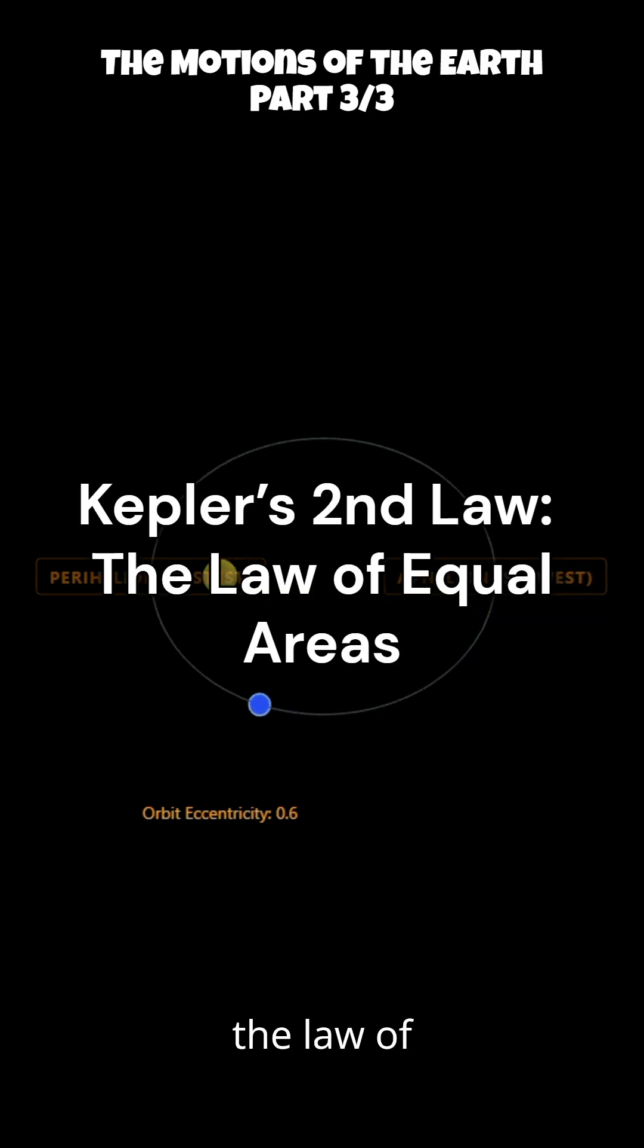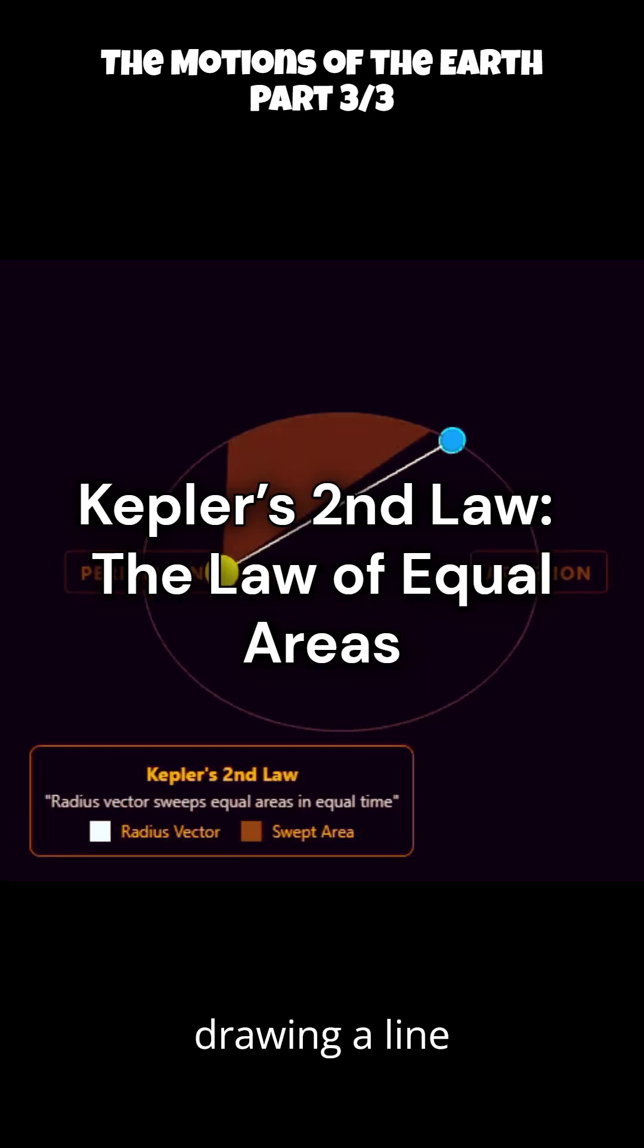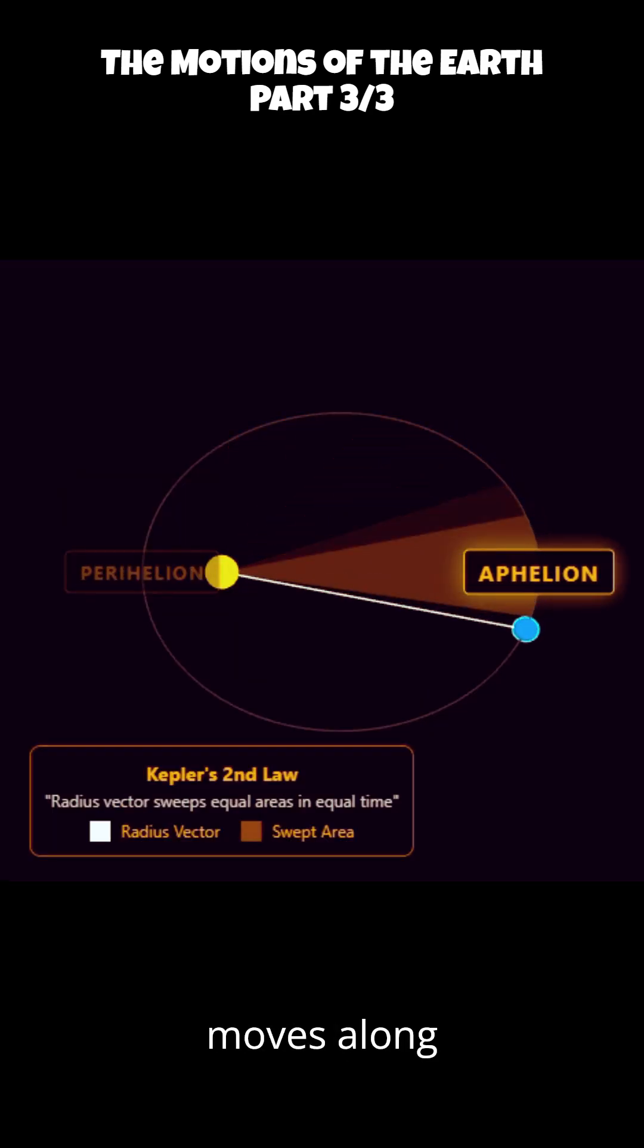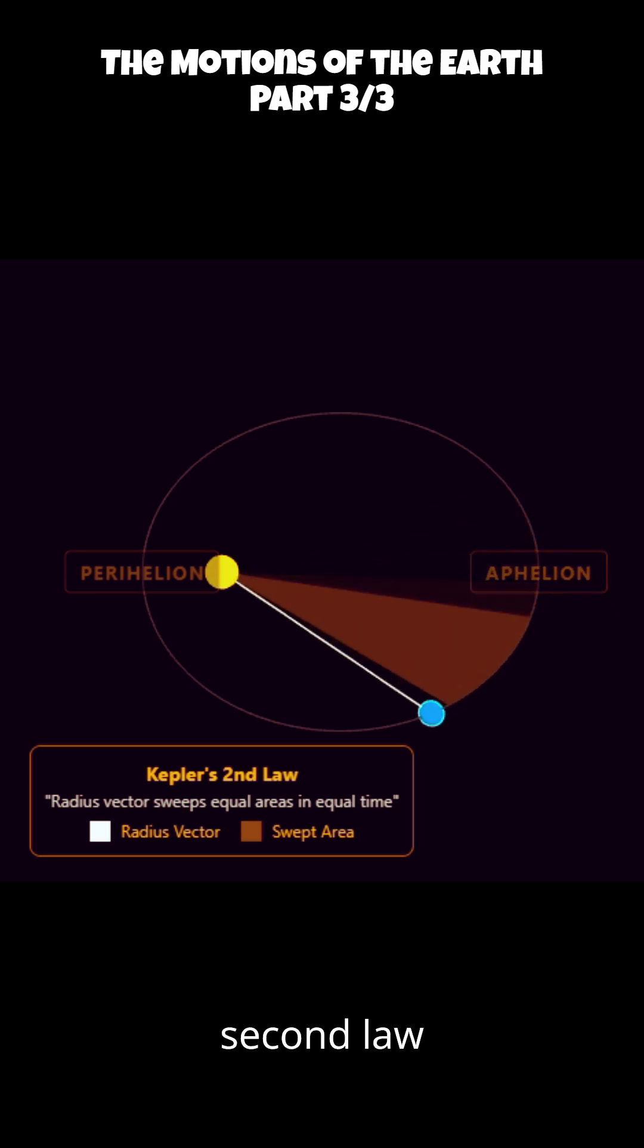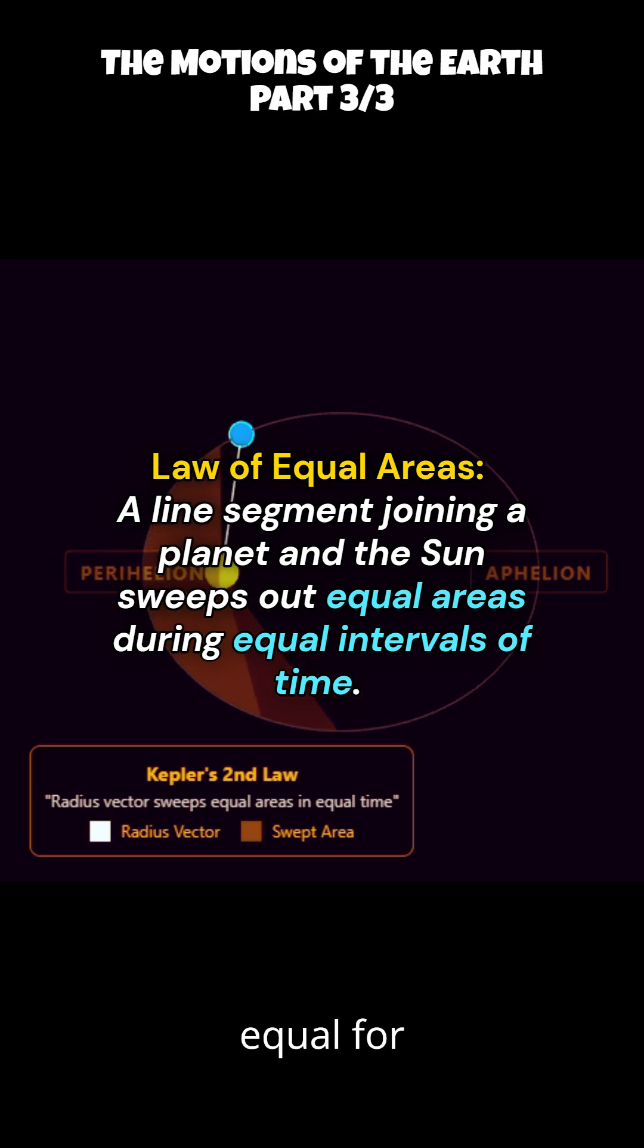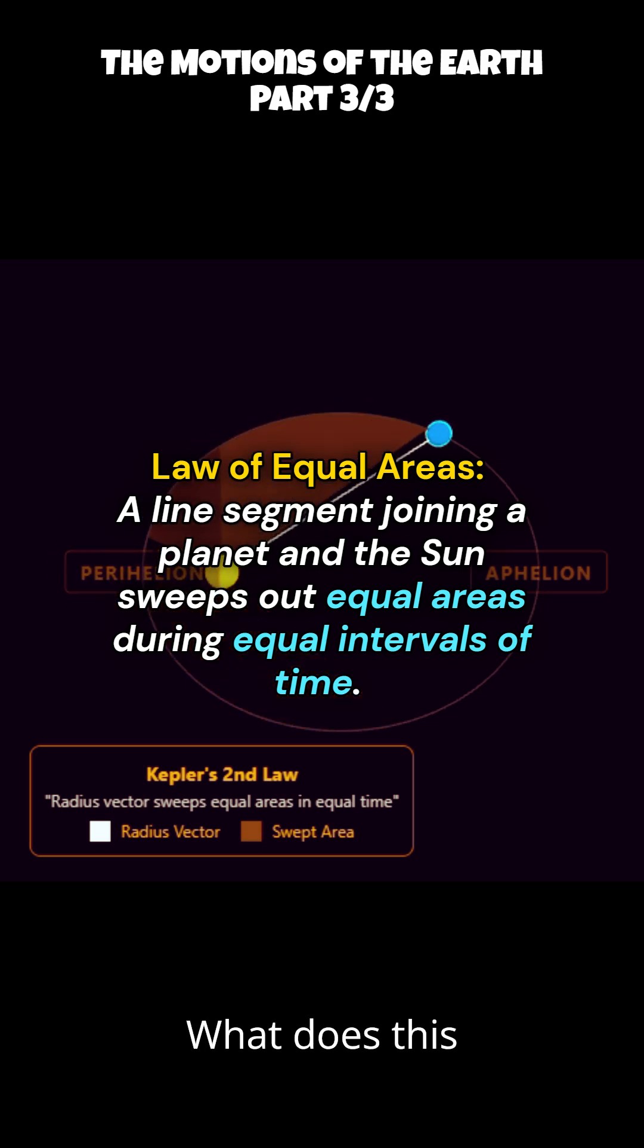Kepler's Second Law, The Law of Equal Areas. Imagine drawing a line from the Earth to the sun while Earth moves along its orbit. Kepler's Second Law states that this line sweeps out areas that are equal for equal times. What does this mean?